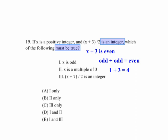Well, if we look at it, that tells us x has to be odd. But does it have to be a multiple of 3? No, we've already said it could be 1. So that's not a multiple of 3.